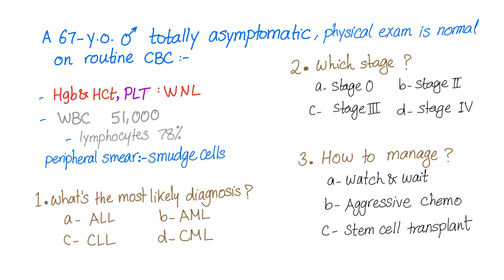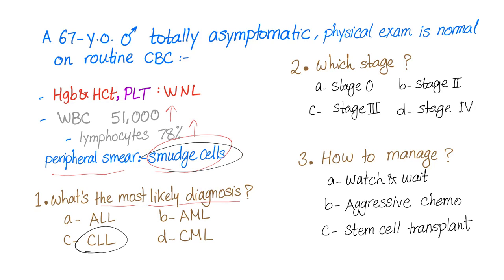Here is a clinical vignette: a 67-year-old woman is totally asymptomatic, and physical exam is normal. On routine complete blood count, hemoglobin, hematocrit, and platelets are within normal limits. White blood cell count is 51,000 — that's a lot. Lymphocytes are 78% of the total white blood cell count — also a lot. Peripheral smear shows smudge cells. What is the most likely diagnosis? CLL — we have smudge cells, lymphocytosis, and a patient older than 60.